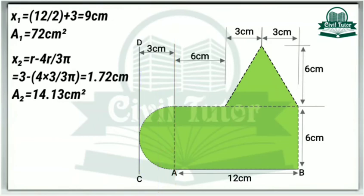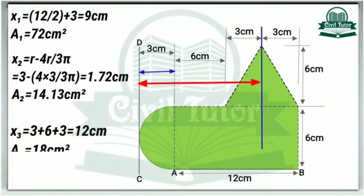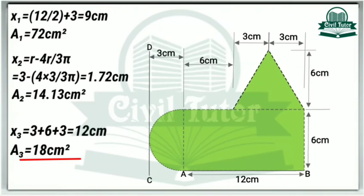A2 as calculated earlier is equal to 14.13 centimeter square. Let X3 be the centroidal distance of area 3, which will be equal to 3 centimeter plus 6 centimeter plus 3 centimeter. Since this triangle is symmetrical about this axis, the CG of this triangle will lie on the axis of symmetry. A3 as calculated earlier is equal to 18 centimeter square.